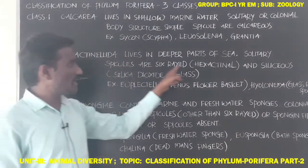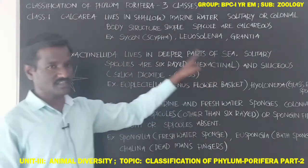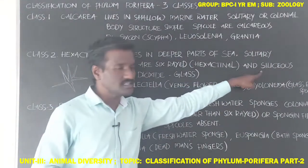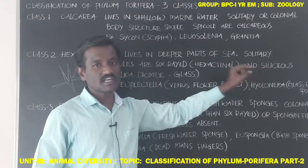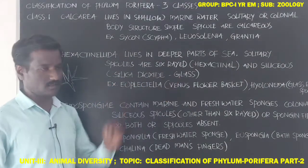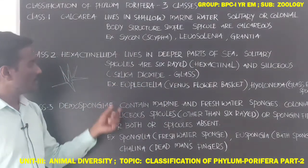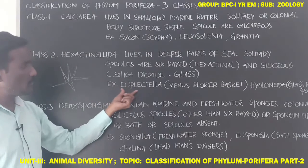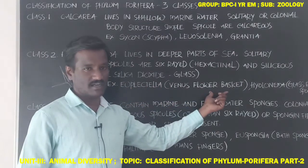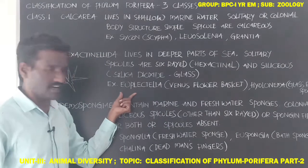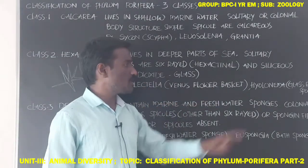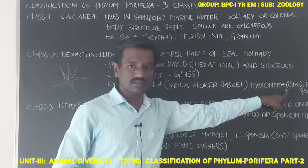Where hexactinal spicules are present, the class is named Hexactinellida. These spicules are also siliceous, meaning made up of silica dioxide or glass. Examples include Euplectella, commonly known as Venus' Flower Basket, and Hyalonema, known as the Glass Rope Sponge.